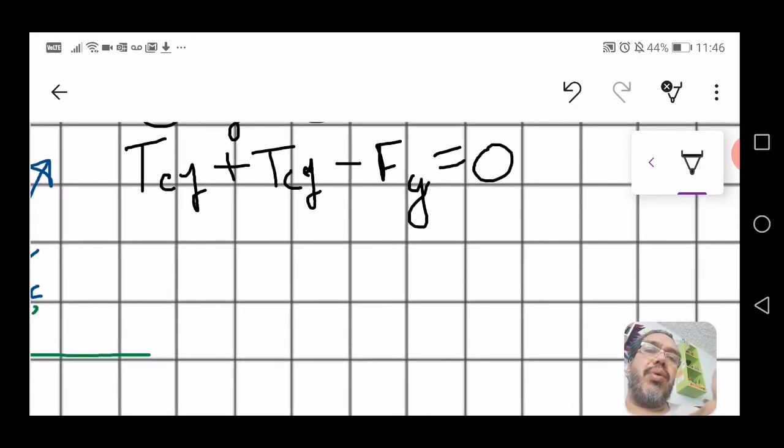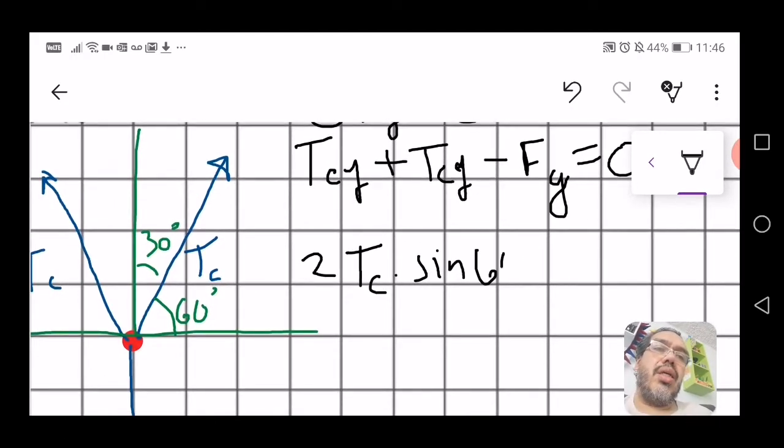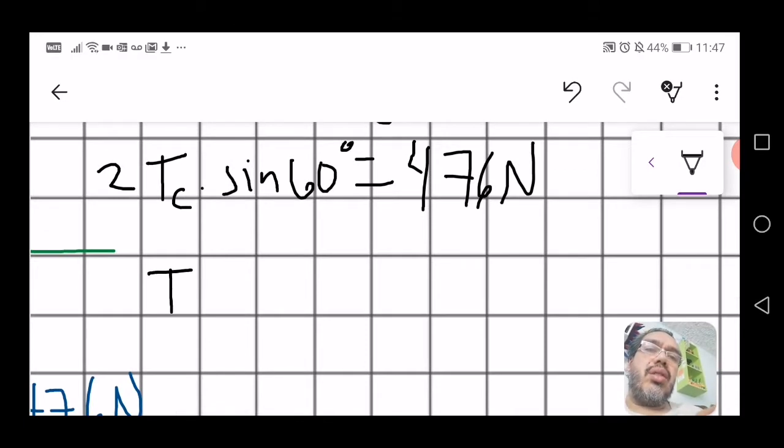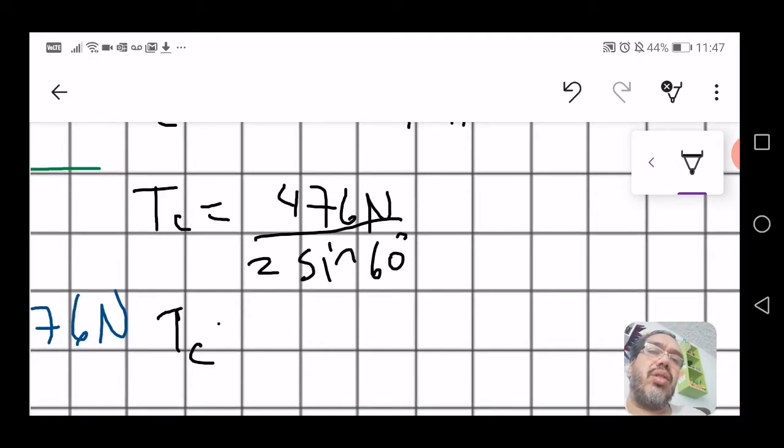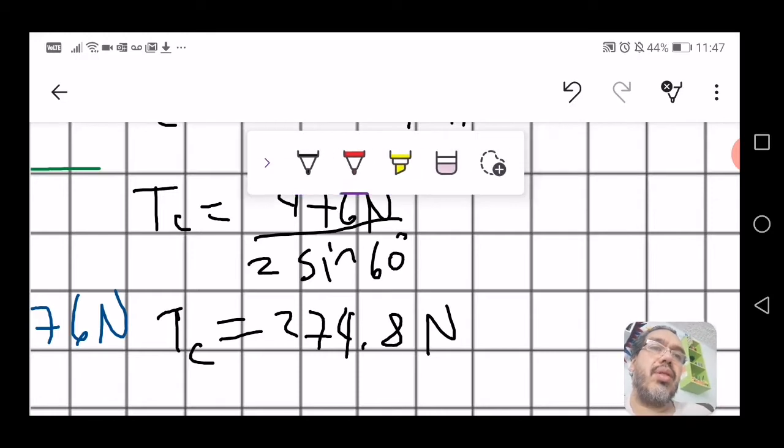You substitute each of the components and you add them up. So, that's 2 times tension C times the sine of 60 degrees is equal to 476 N. And so, your tension C is equal to 476 N divided by twice the sine of the angle. And that's pure arithmetic. So, your tension C is equal to 274.8 N. That is your first answer.